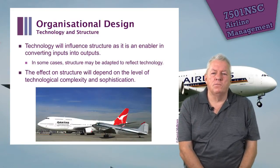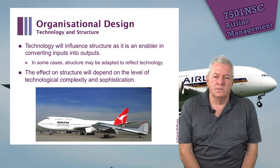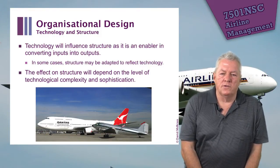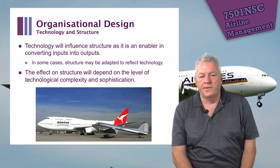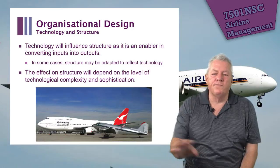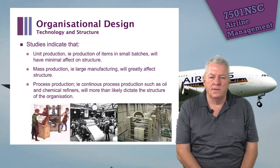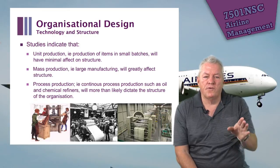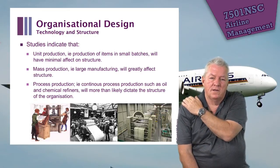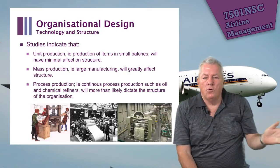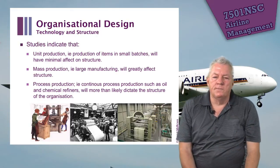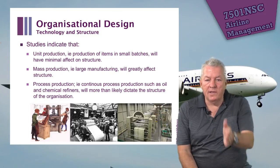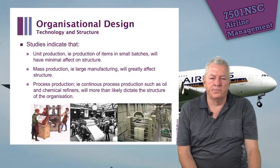Technology will influence structure — it's a great enabler in converting inputs to outputs. The effect on structure depends on the level of technological complexity and sophistication. Looking at a 747 compared to a DC-3 at Qantas, obviously very different organizations are required. Unit production — items in small batches — has minimal effect on structure; mass production greatly affects structure; and process production, such as in the oil industry, steel mills, and the printing industry, more than likely dictates the organization's structure. Airlines are a process production business.